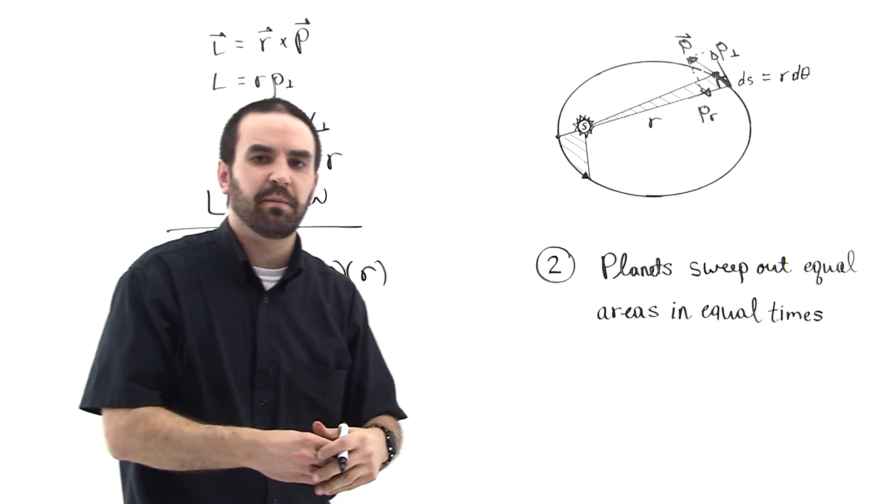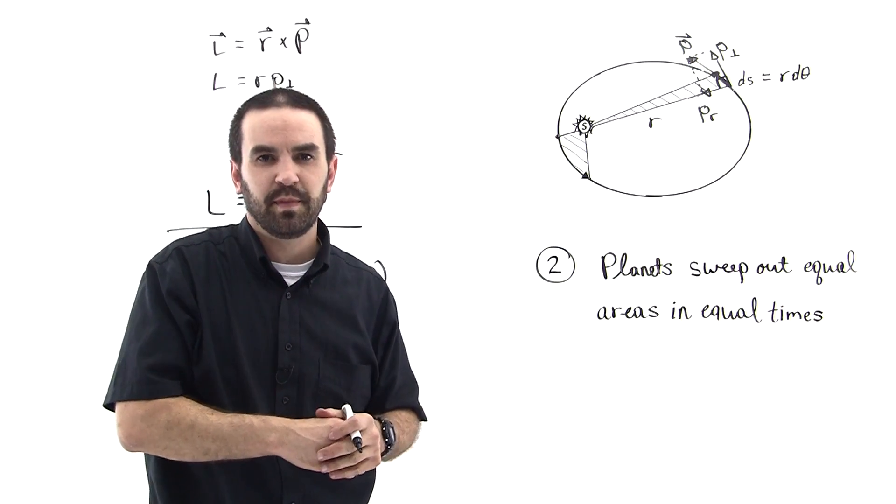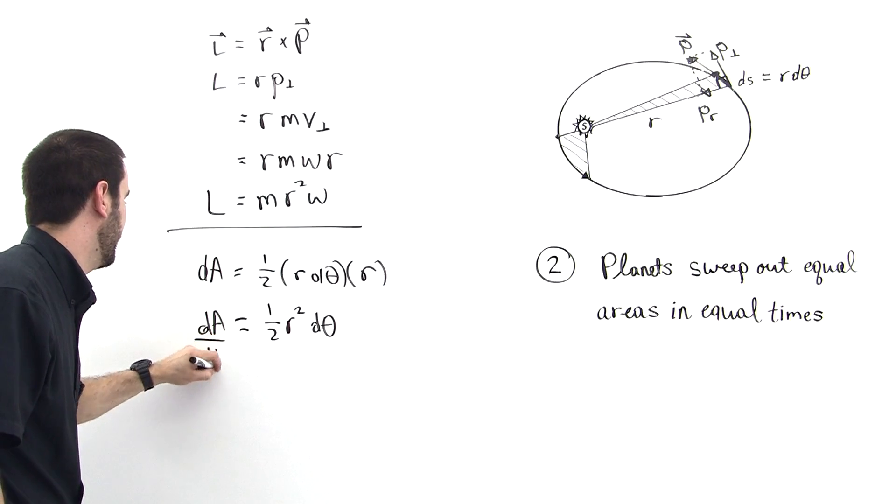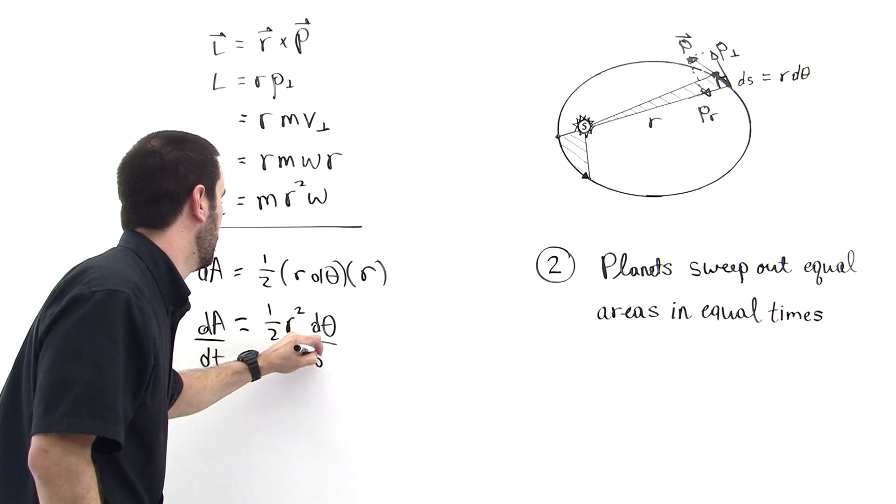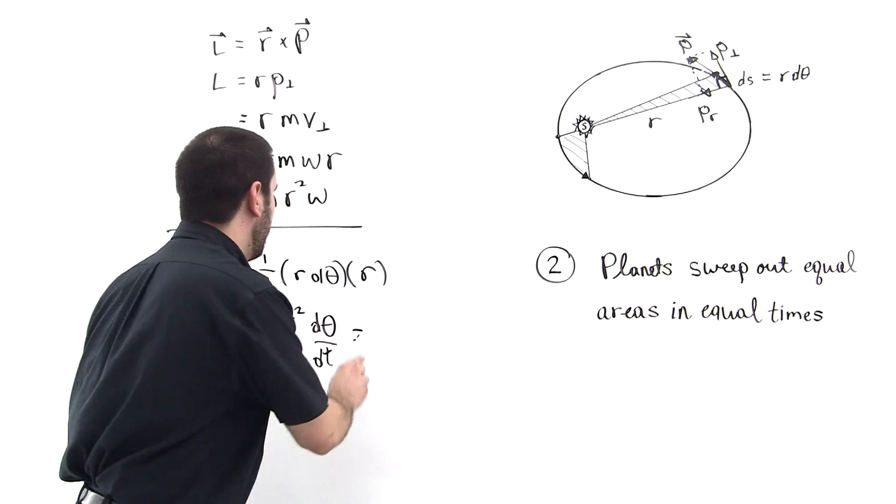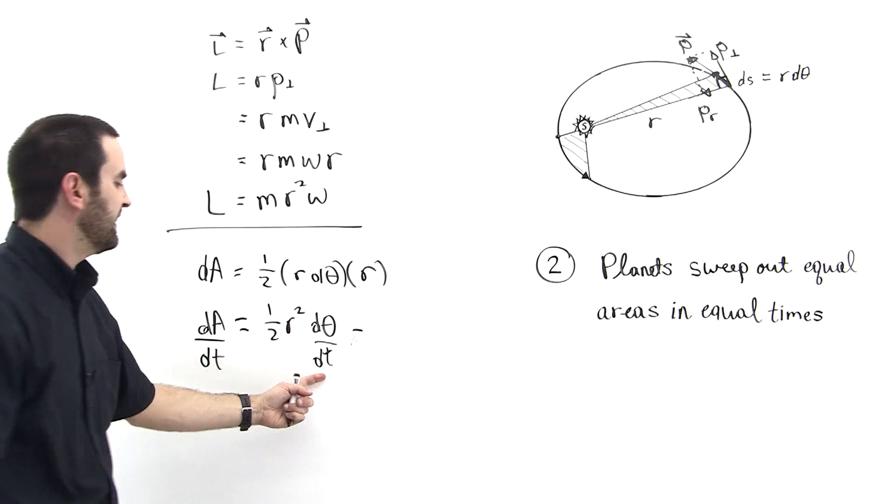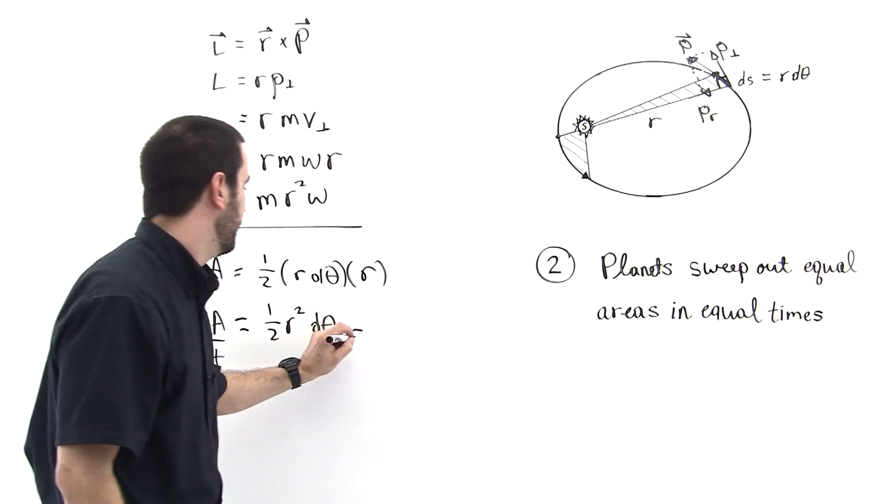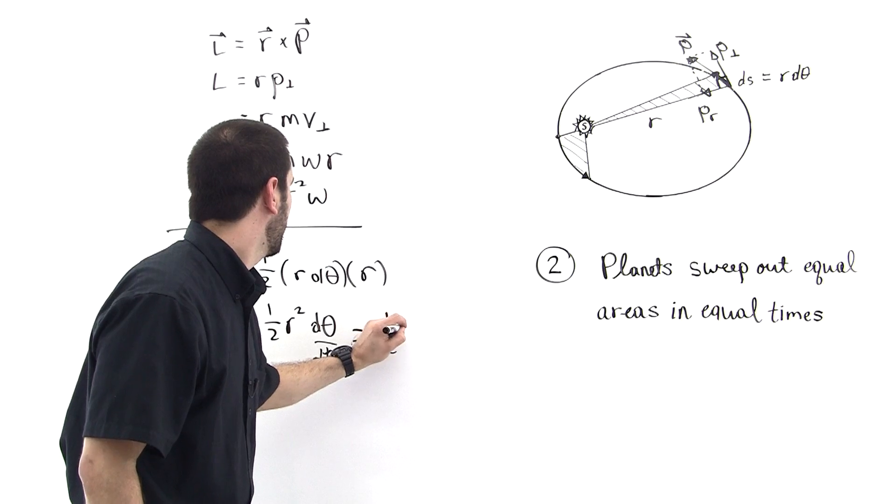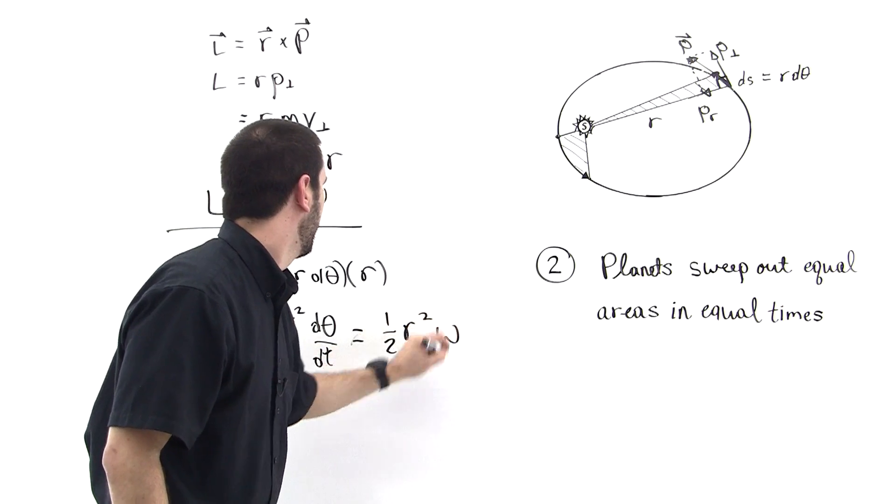So this occurs over some amount of time, so we can divide by dt on both sides, get the time rate of change for the area and the time rate of change for the angle. And then notice this is just, what's d theta dt? That's just equal to omega. So this is one-half r squared omega.